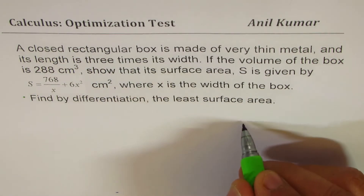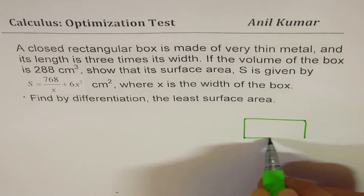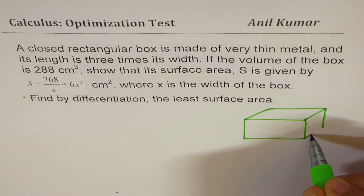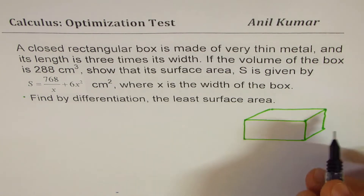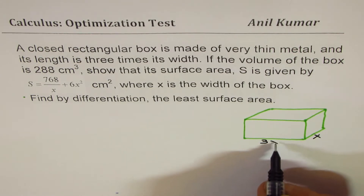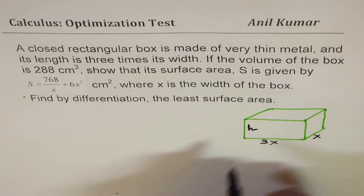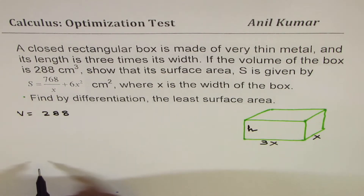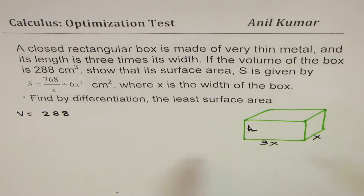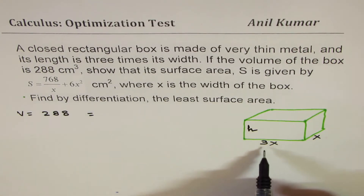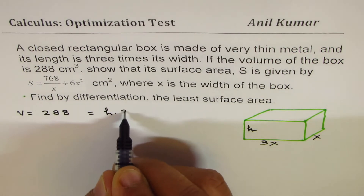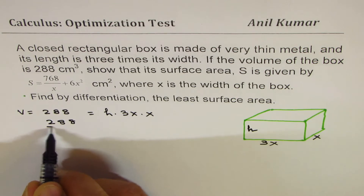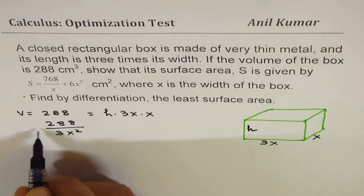A closed rectangular box — so let me make a box first. What we are given is that its length is three times the width. What we don't know is the height, but we are given the volume, so that helps. So if width is x, then three times x is the length, and let us say height is h. Since the volume equals 288, volume equals length × width × height, so it's h × 3x × x. From here we can say that h = 288 / (3x²).